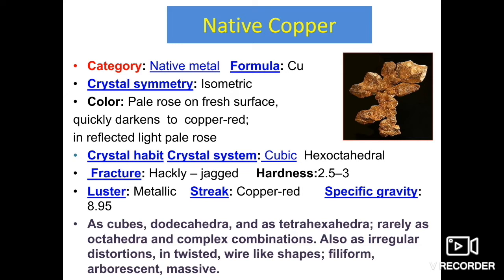Luster is metallic — we all know copper is a metal. The streak is copper red. Specific gravity is 8.95, which is quite high. Normally it is high at 8.95.